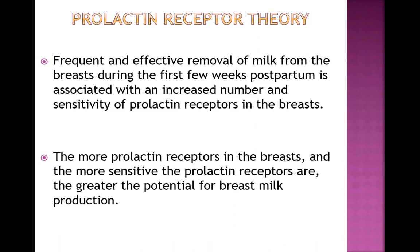The more prolactin receptors in the breast, and the more sensitive those receptors are, the greater the potential for breast milk production. That's why early supplementation with formula in the first two weeks can make it much more challenging for moms to build a good milk supply — they won't develop as many prolactin receptors, making it difficult to produce more milk.